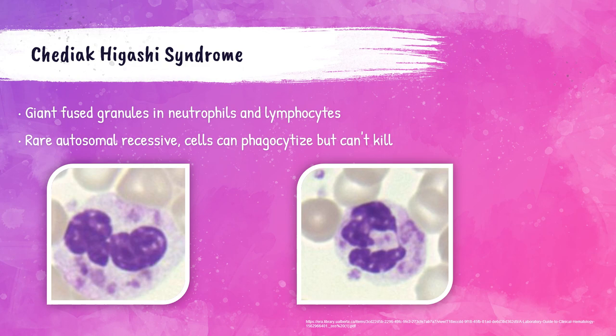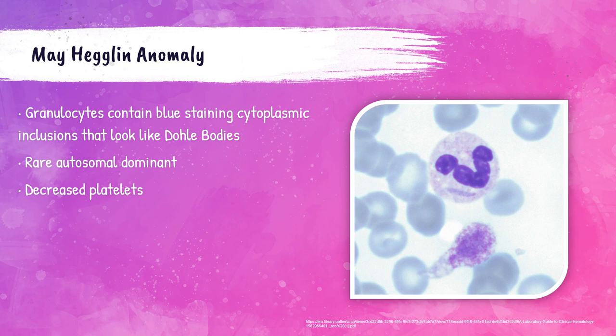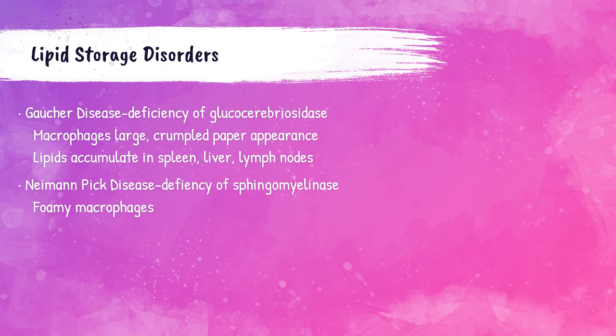May-Hegglin anomaly is a rare autosomal dominant disorder characterized by decreased platelets and giant misshapen platelets. Granulocytes in this disorder contain blue cytoplasmic inclusions that look like döle bodies.